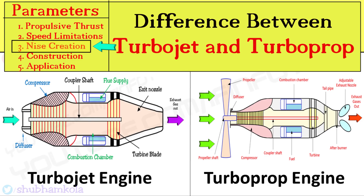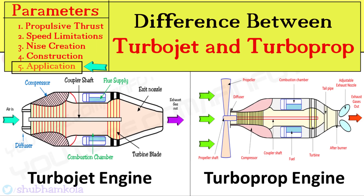Noise creation in turbojet engines is more compared to turboprop engines. Turbojet engines are used in jet aircraft and compact aircraft, whereas turboprop engines are used in powered helicopters and marine applications.